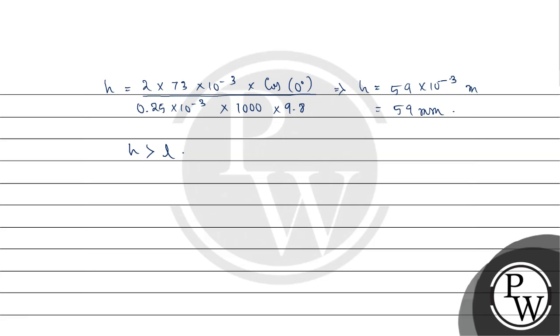Now let capital R be the radius of the meniscus. We know the formula for radius of meniscus, which is given by 2 sigma divided by capital R equals h dash rho g, where h dash is the height of the water column.